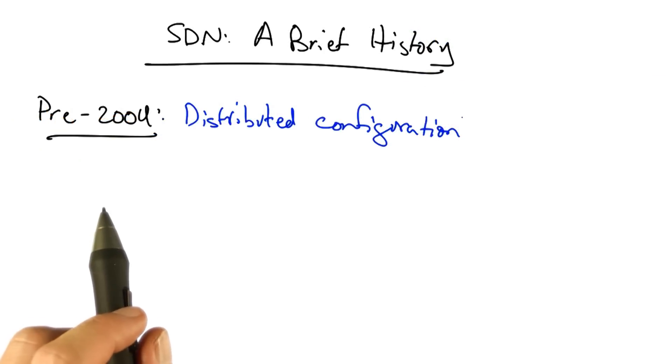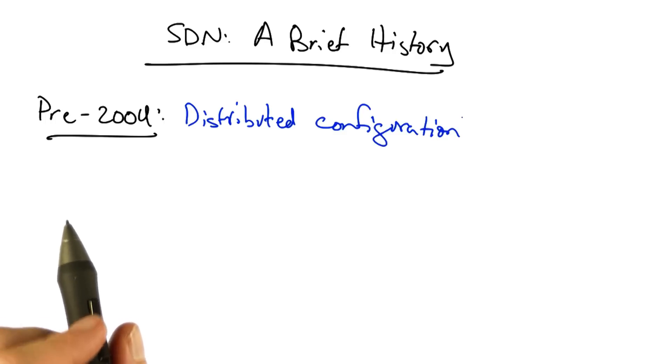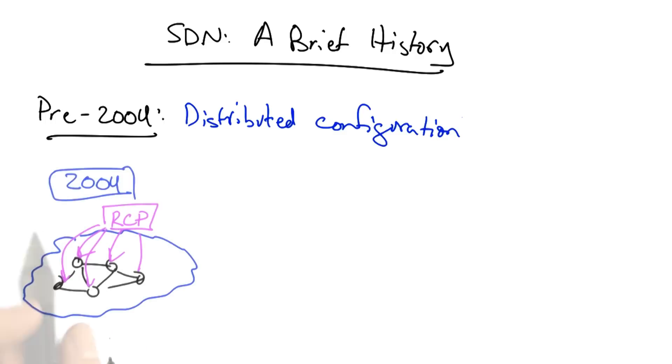Let's survey a brief history of SDN. Previous to 2004, configuration was distributed, leading to buggy and unpredictable behavior. Around 2004, we had the idea to control the network from a logically centralized high-level program. That logically centralized controller focused on the border gateway protocol, and was called the routing control platform, or RCP.